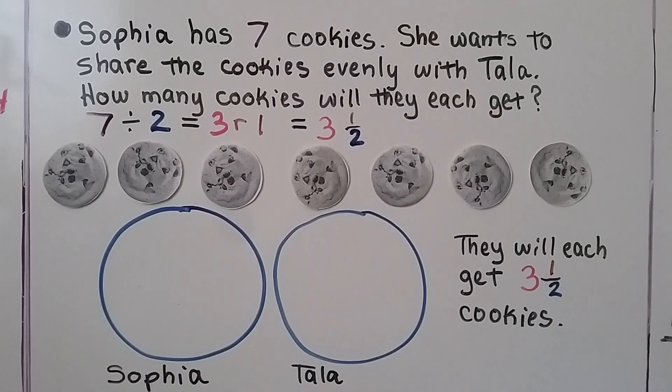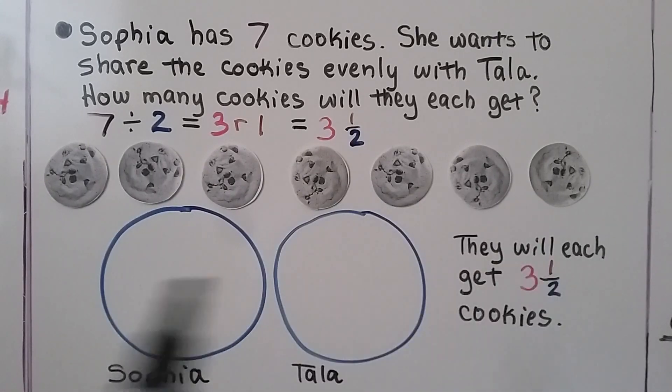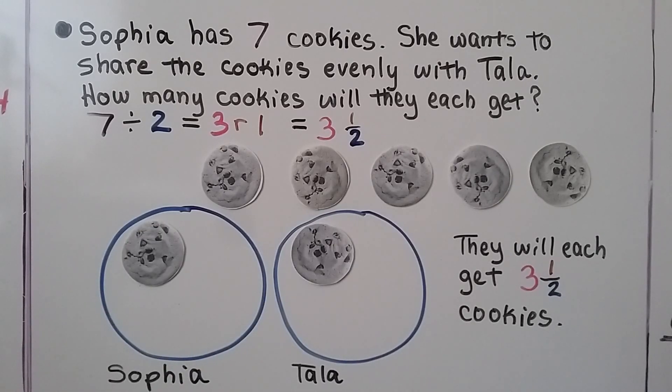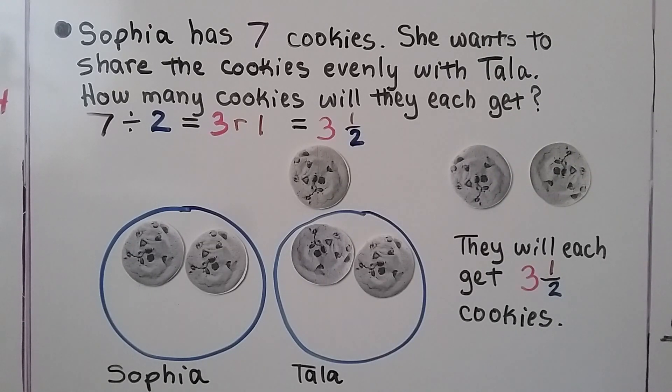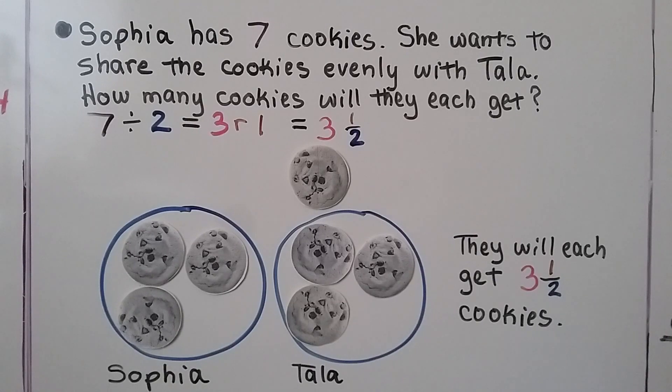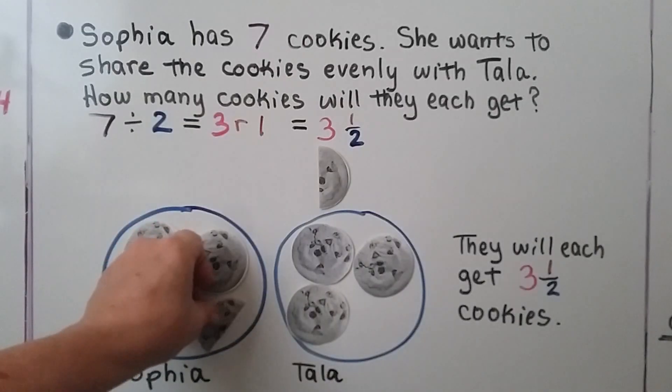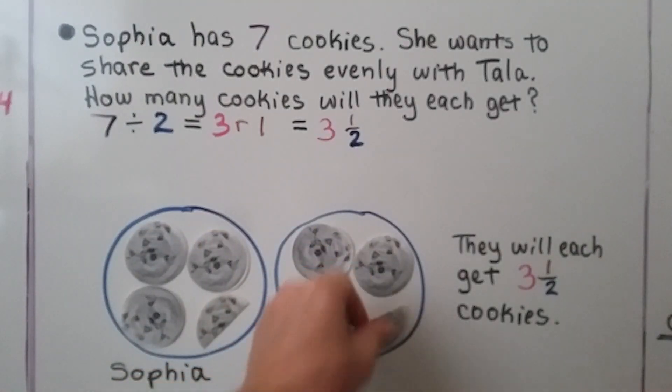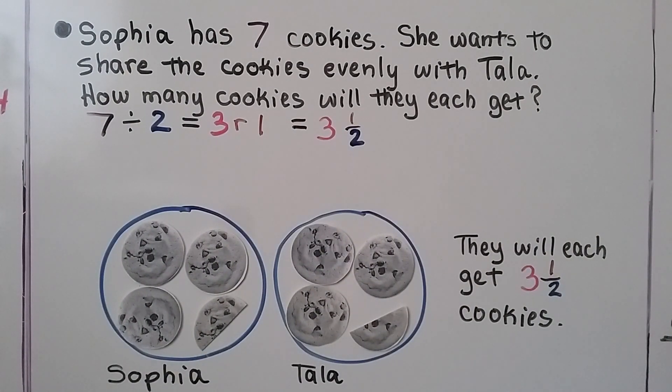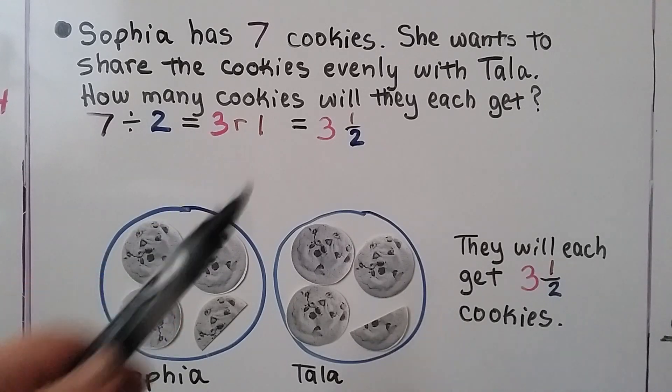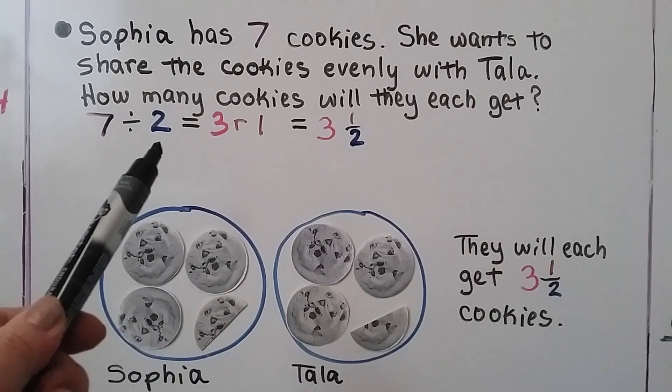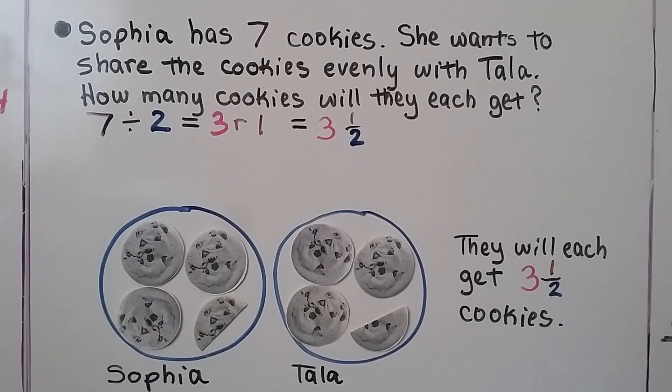Sophia has 7 cookies. She wants to share the cookies evenly with Tala. How many cookies will they each get? Well, we have 7 cookies here and we can put them into groups for Sophia and Tala. We can each give them 1. Now they have 2 each. Now they have 3 each. We have 1 cookie left over. If we split this cookie in half, they can each have half of a cookie. Then they both have equal shares. They will each get 3 and a half cookies. We had a 3 with remainder 1. The 1 became the numerator. The divisor 2 became the denominator. They each get 3 and a half cookies.